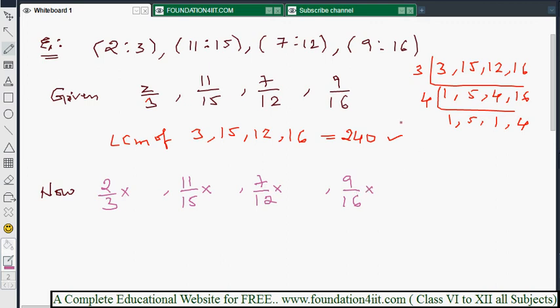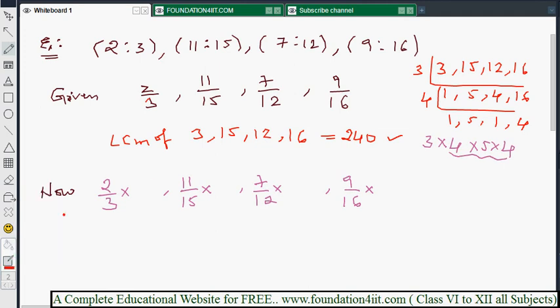First is 3. Here 240 has come from 3 into 4 into 5 into 4. This is 240: 3, 4 is 12, 5 is 60, 64 is 240. Here denominator is 3. So except 3, remaining values you check now. 4 into 5 into 4: 4 is 20, 24 is 80. So with 80 multiply and divide.